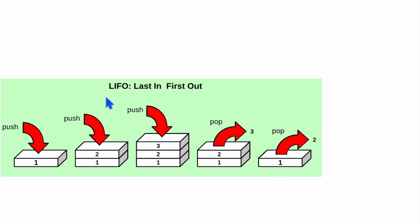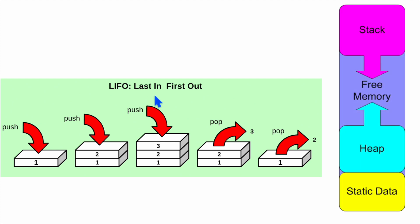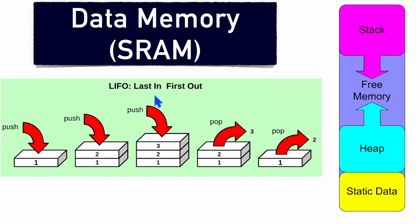This works in a LIFO manner — Last In First Out. This stack memory is present in the data memory of SRAM and is located at the end of SRAM. As you can see, it is present at the end of SRAM and it grows downward.